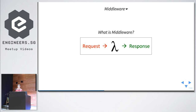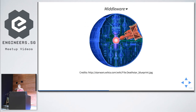Middleware — what is middleware? Middleware is basically a lambda black box: it takes in a PSR7 request and returns a PSR7 response. I don't care how it is implemented — it is just a black box. There are many ways of using middleware. One way is what we call the onion model, like an onion you peel layer by layer.